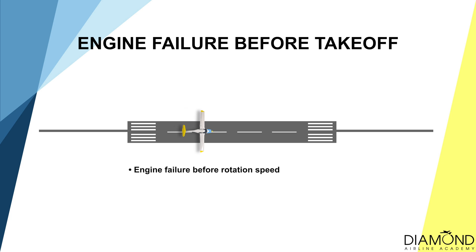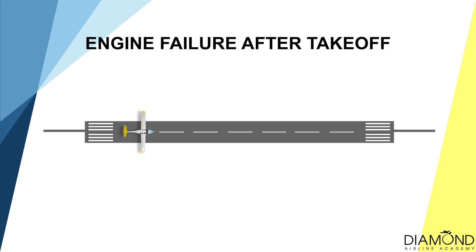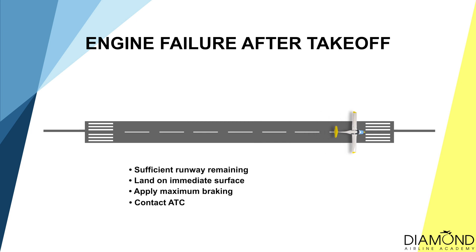After completing the take-off safety brief, we can now proceed with the flight. In the unfortunate event of an engine failure within the circuit, we can follow the actions we have just briefed and conduct a forced landing. If the engine fails before the rotation speed, reduce power to idle and apply enough braking to stop on the remaining runway. If the engine fails after rotation but there is enough runway remaining, we'll be landing on the immediate surface and apply maximum braking to stop.